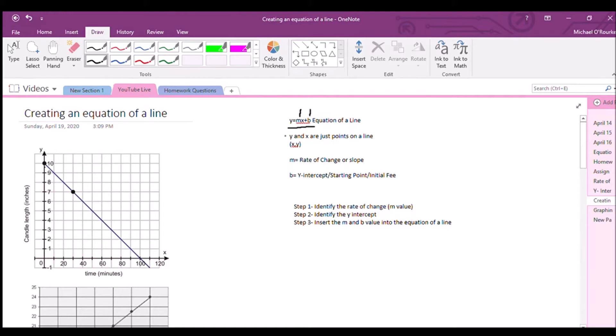And what the equation line does is allows us to plug in. So let's go Y equals MX plus B. We know how to find this, right? That's our rate of change. We know how to find this. This is our Y intercept.